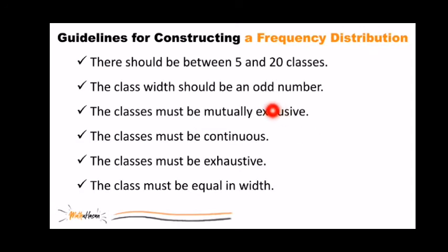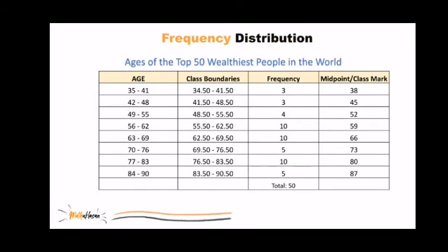The class width should be an odd number for us to prevent having a decimal class midpoint or class mark. Third, the classes must be mutually exclusive. So there should be no overlap in the intervals. So like in our earlier example, it can't be 41 here and then 41 on the other side or 38 or 39. There should be no overlap. That's why there's a proper way to construct class limits or intervals.